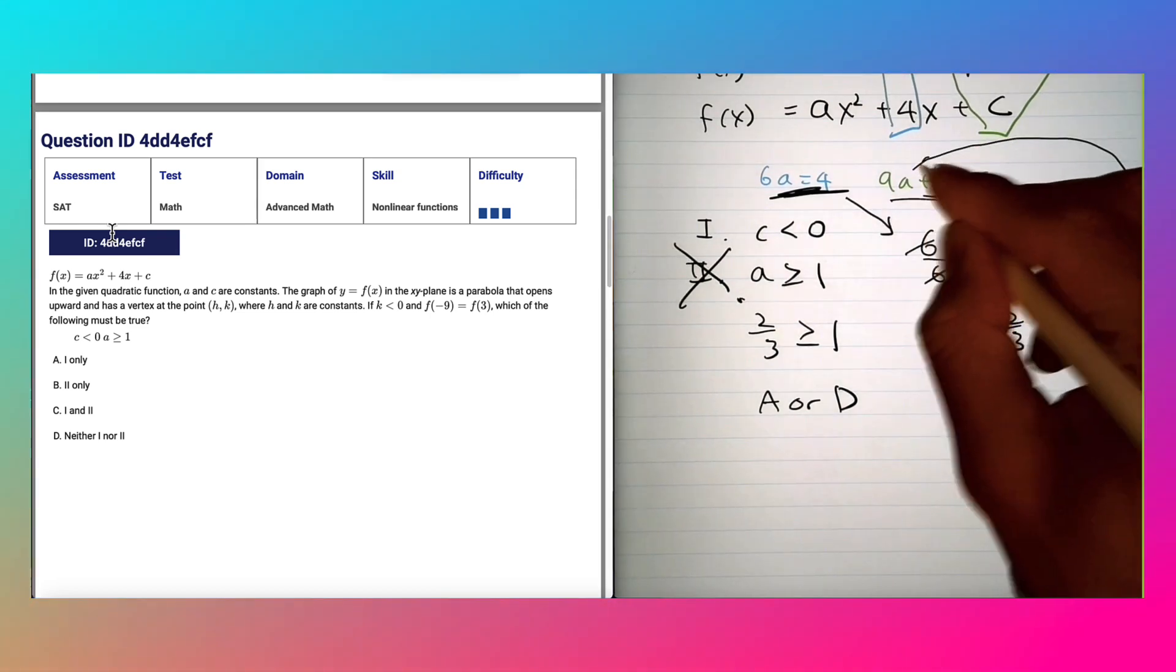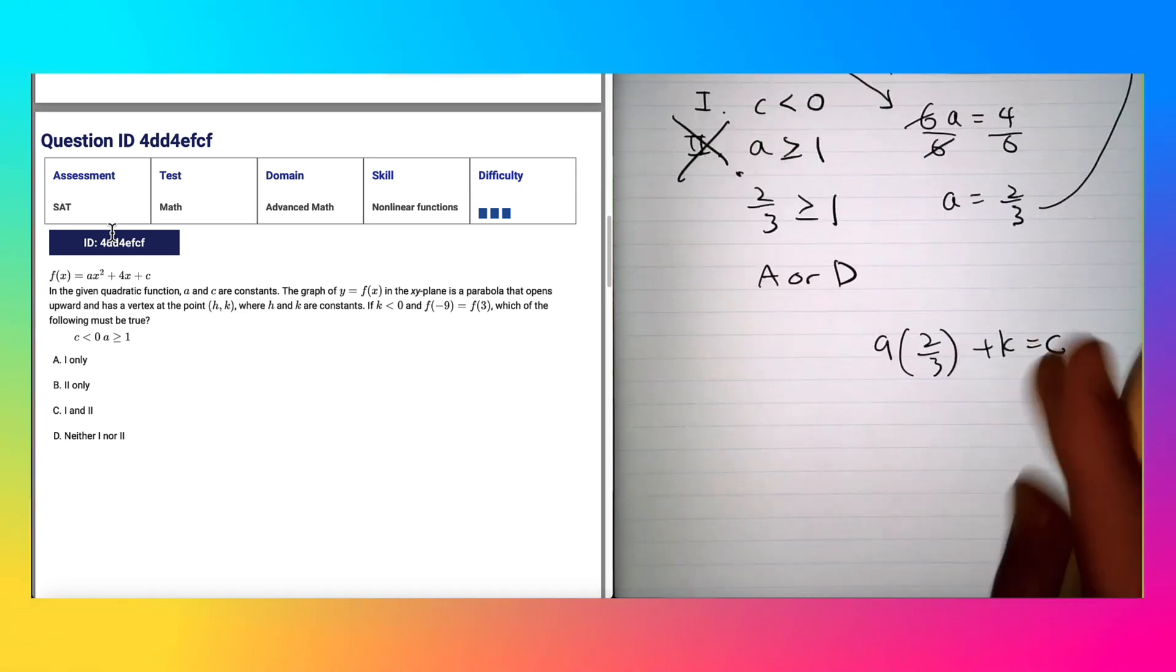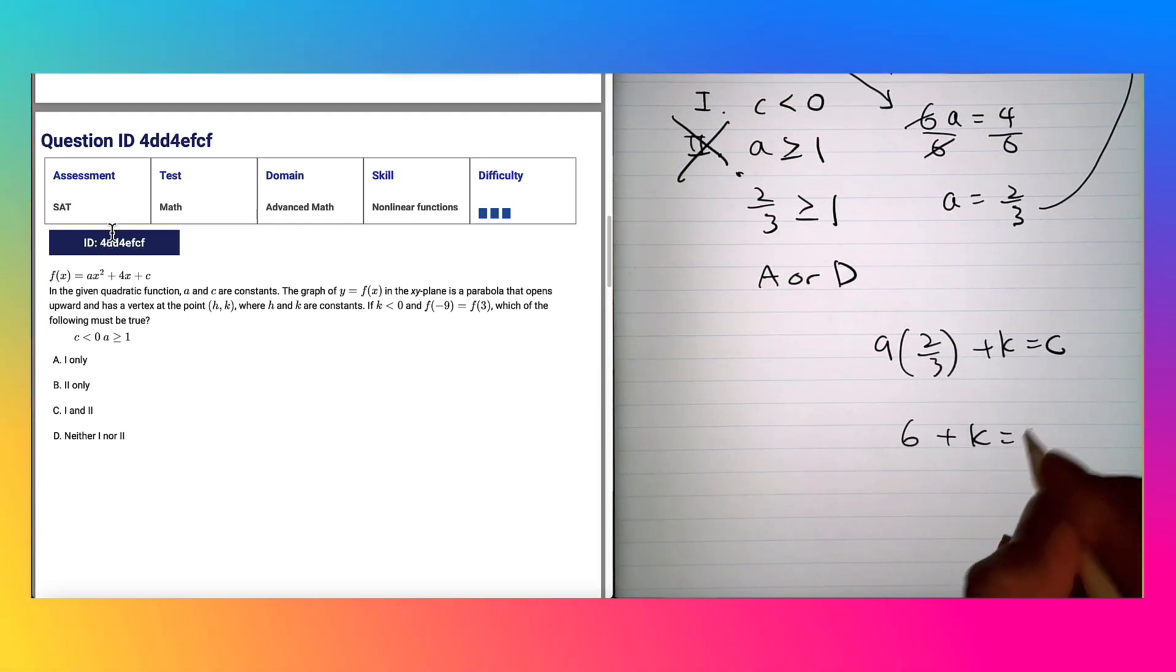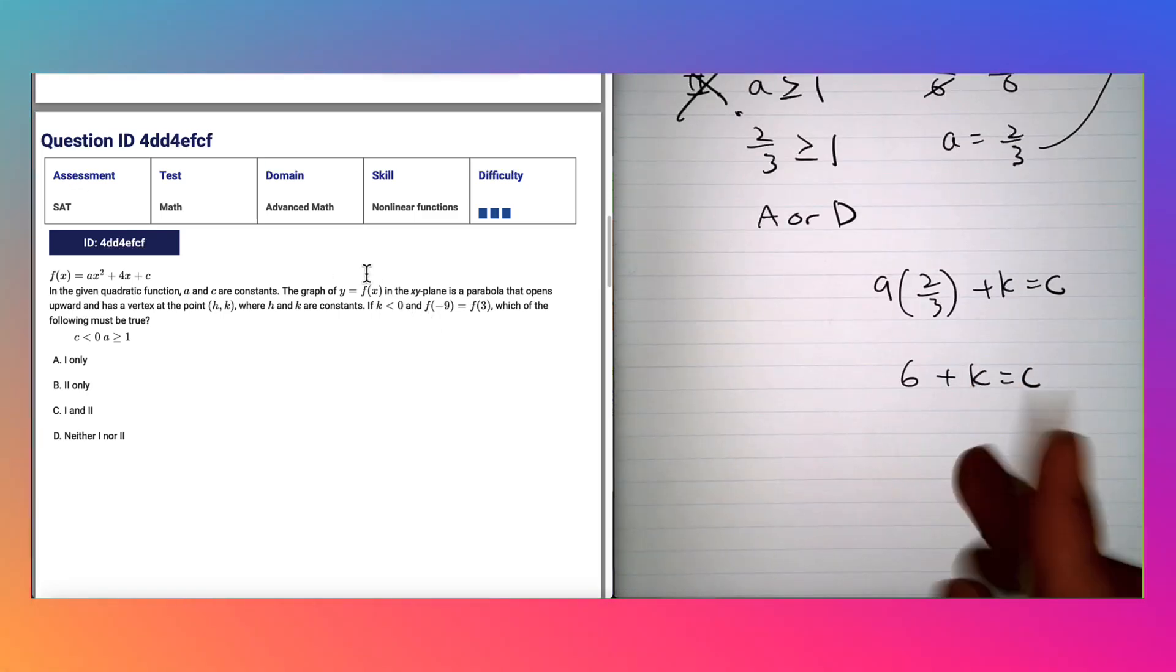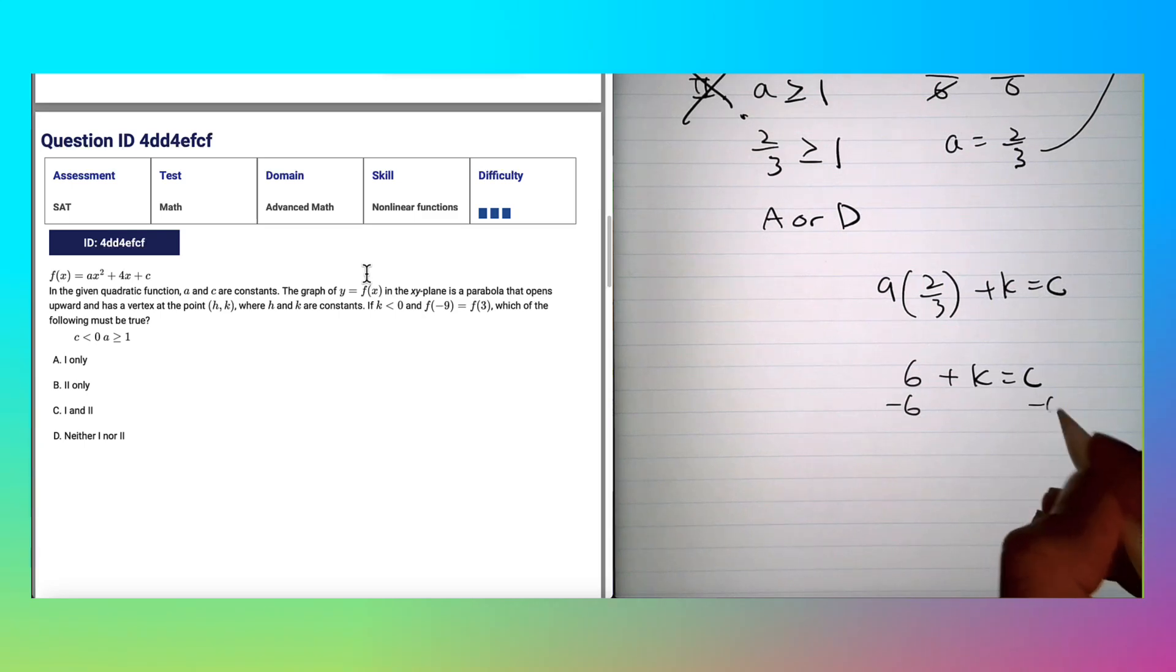For that we can look at the second equation here. We know the value of a and we can plug it in. So 9 × (2/3) + k = c. 9/3 gives you 3, 3 × 2 gives you 6, so you get 6 + k = c.